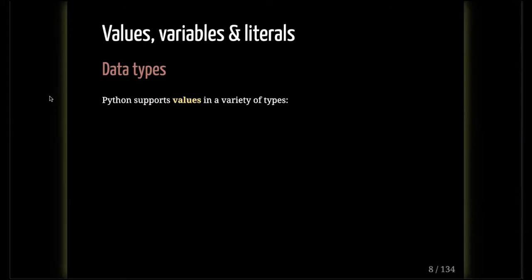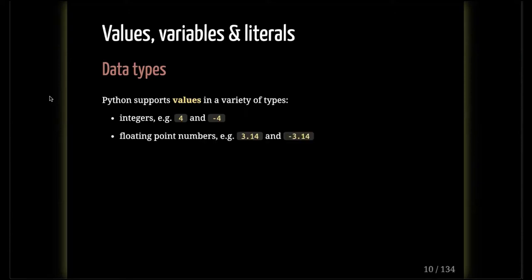There are various types of values in Python. Like every programming language, there are various types. Different programming languages have slightly different variations, but there are some common types almost all share. Integers: you've got 4 or a signed integer, which would have a minus sign. So those are both integers, 4 and negative 4. Floating point numbers, in other words decimal place numbers — 3.14, or negative 3.14. Python handles those as well.